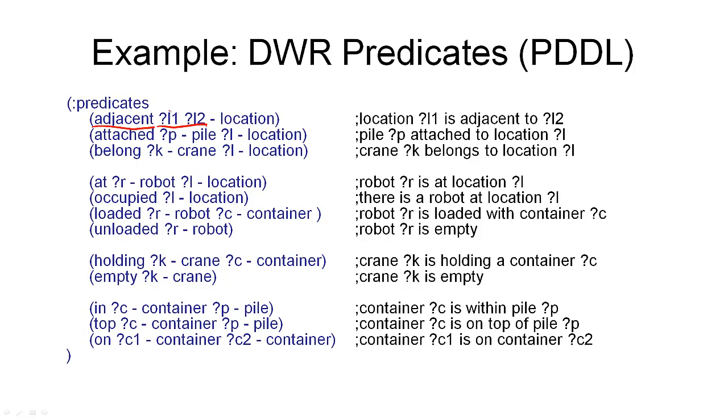They are denoted by variables here. You can recognize a variable in the syntax because it starts with a question mark. So this is not a specific location that we've defined, but just a variable. And this is followed by the minus symbol with the type of those variables. So what this is defining is that adjacent is a relation that is defined over two locations, L1 and L2.